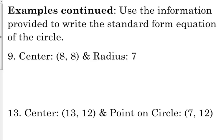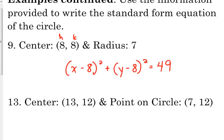So let's practice. We're given various information here. We're going to write the standard form equation of the circle. So the first one we're looking at, number 9, is the center is 8, 8, and it has a radius of 7. Well, that's super easy. Literally, all we're doing is plugging in the H and the K. So that's x minus 8 squared plus y minus 8 squared equals 49. You've got to square the radius when you put it into the equation.